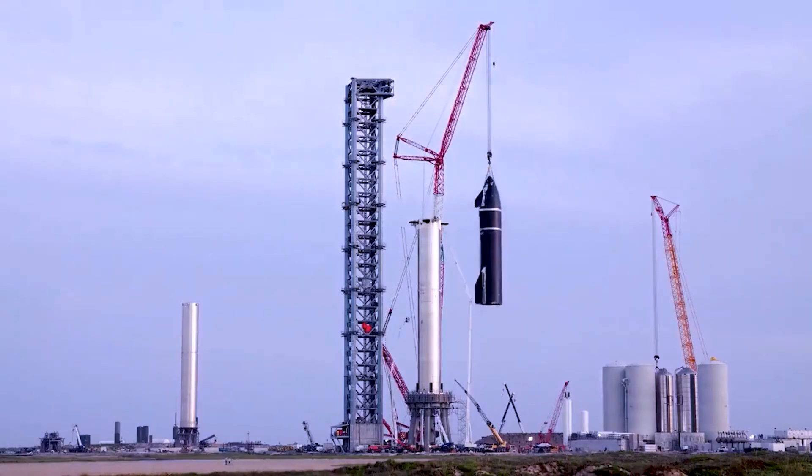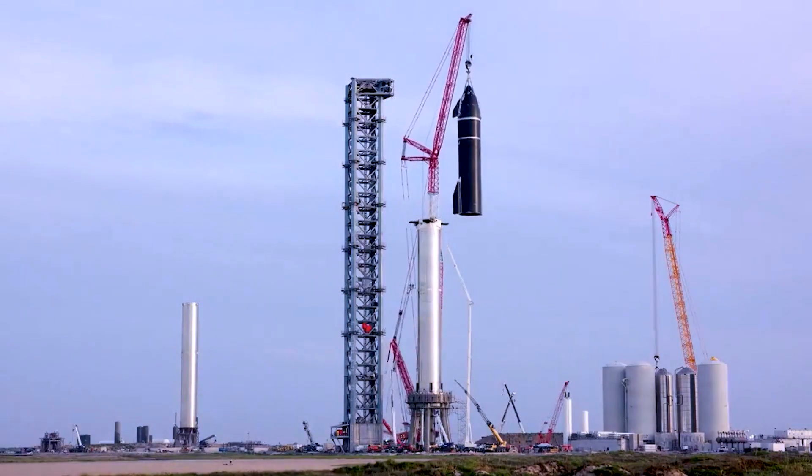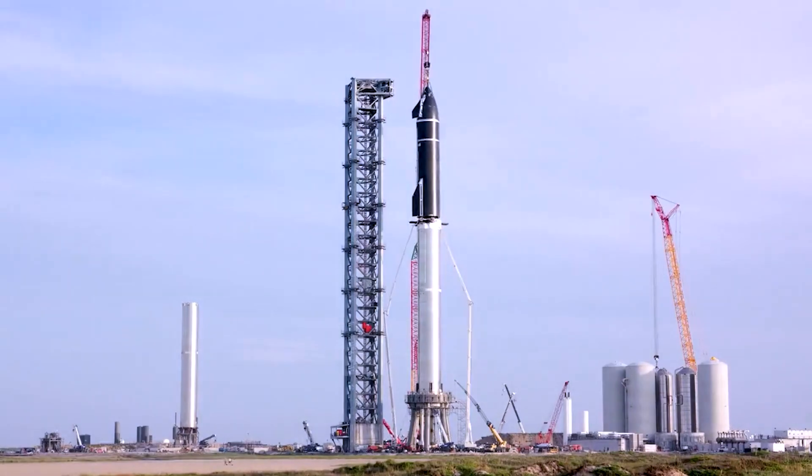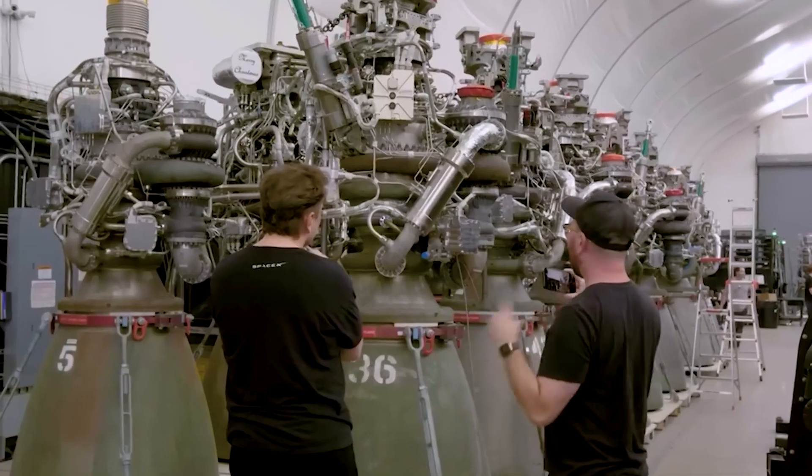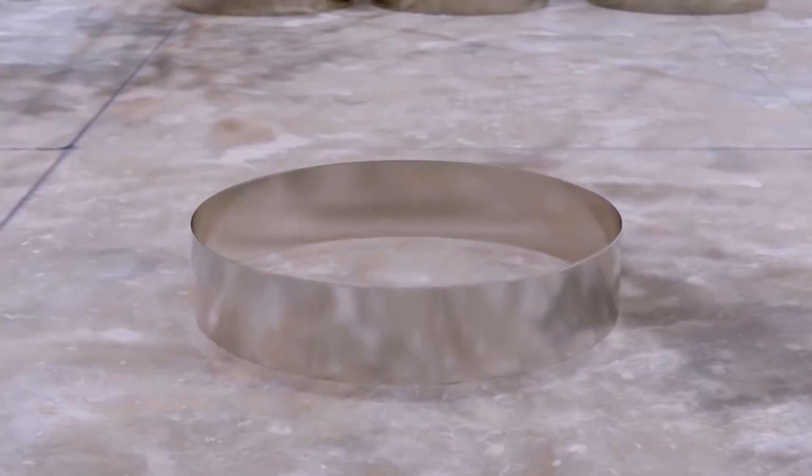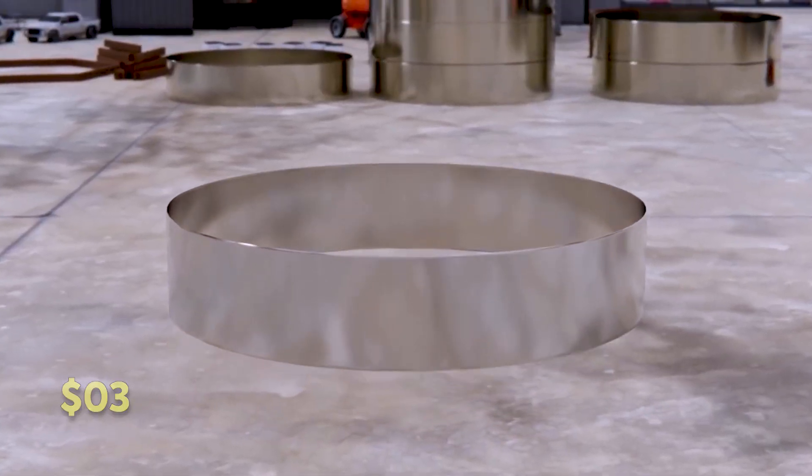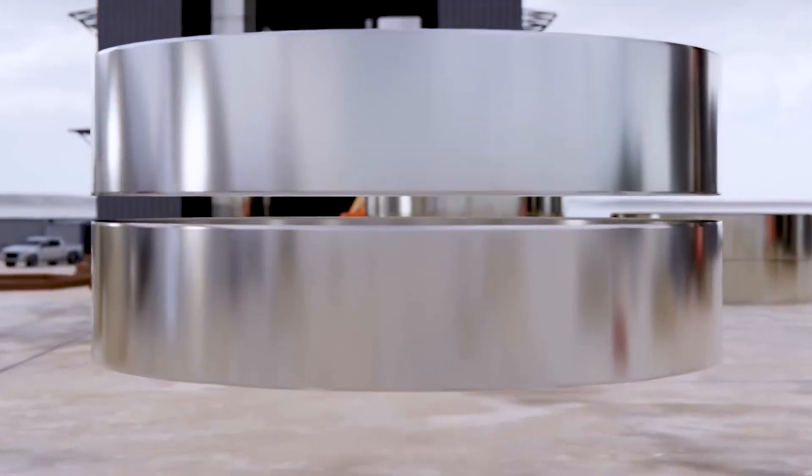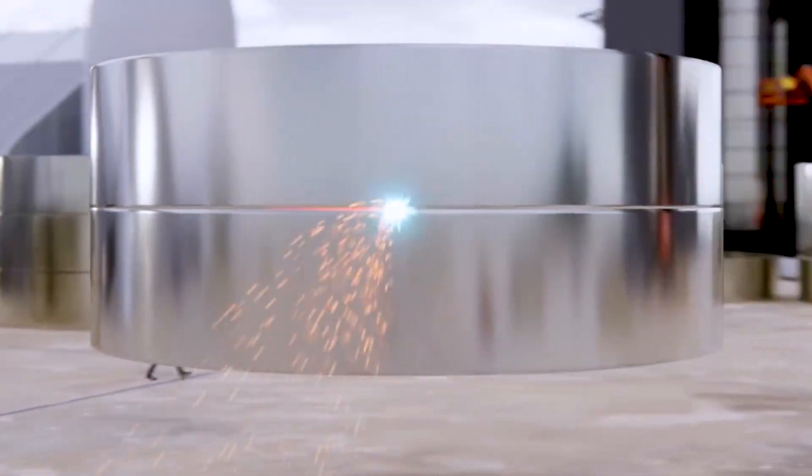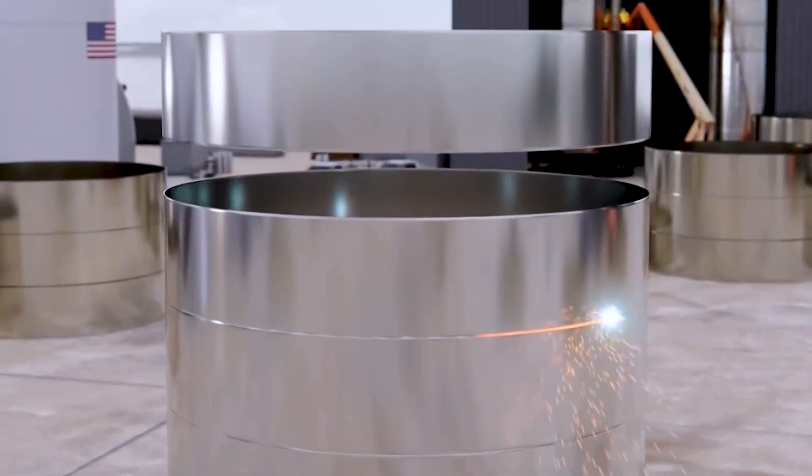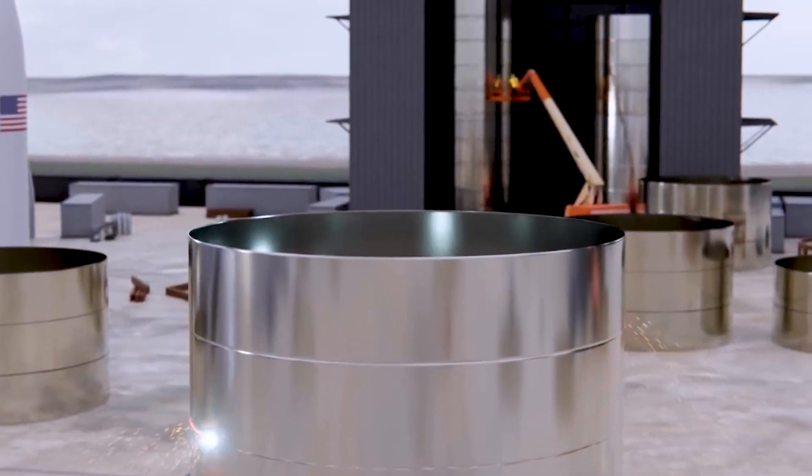Carbon composites possess promise as lightweight and strong materials, but their cost remains a significant drawback when compared to steel. Elon Musk stated that in 2019, SpaceX was spending nearly $1,200 per kilogram of carbon fiber, compared to a mere $3 per kilogram for steel. This transition to steel allowed SpaceX to prototype and iterate the Starship design at a rapid pace, which would have been unfeasible if they had stuck with carbon composites.